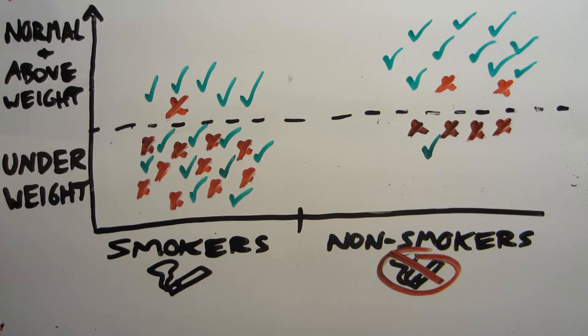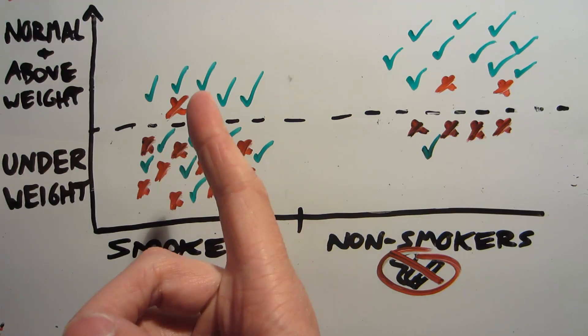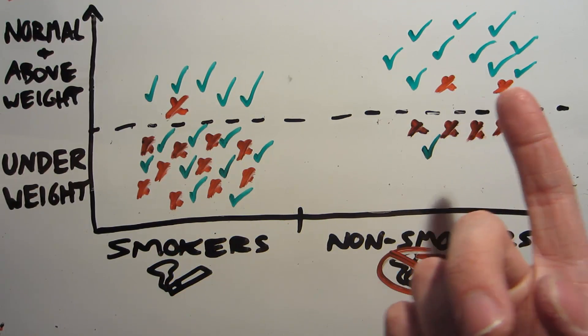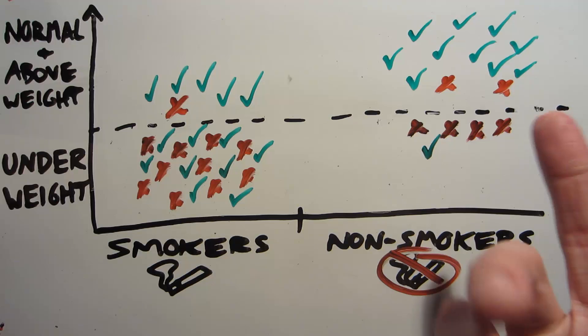Now conversely, smokers babies who are not underweight might have something extra going for them. Maybe they're extra healthy. And so despite being smokers babies, their mortality rate will be about the same as non-underweight non-smokers babies.